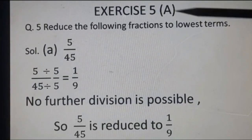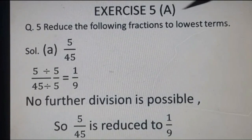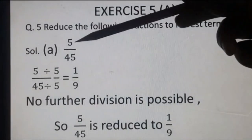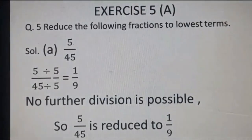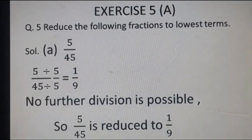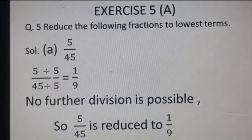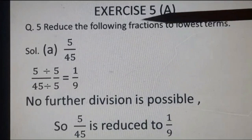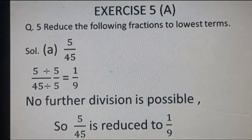Let's start with exercise 5A, question number 5: reduce the following fractions to the lowest terms, or lowest forms. Part A is 5 upon 45. We know that both numbers are divisible by 5, so we have to take the number which will divide both numerator as well as denominator. Lowest term means small form.